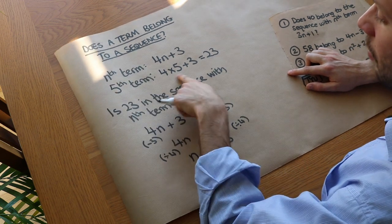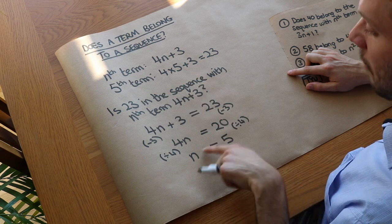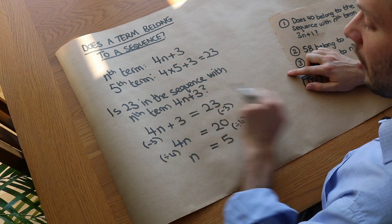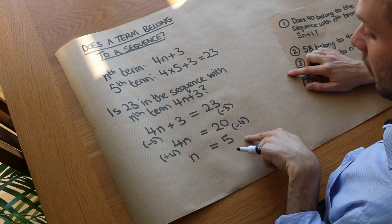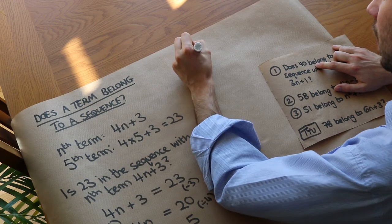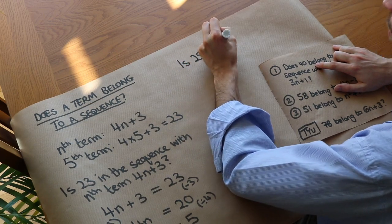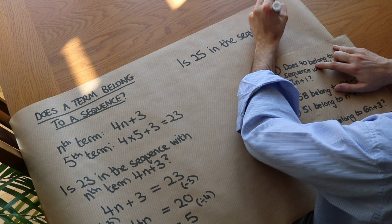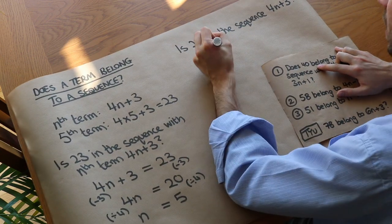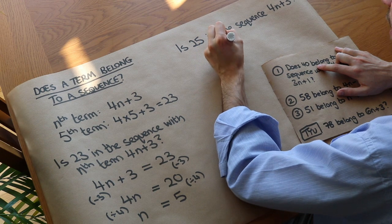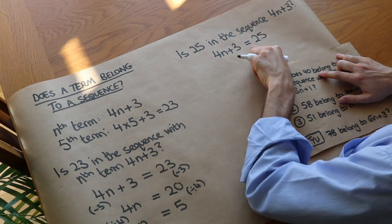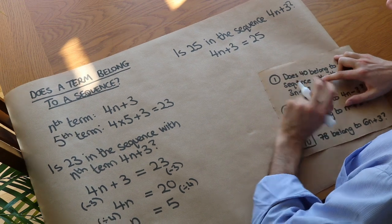We already knew that from before, but now we have a way of doing it backwards — if we know what the term is, we can work out where it sits in the sequence. But what if we ask a similar question: is 25 in the sequence 4n plus 3? If so, we'd set 4n plus 3 equal to 25.